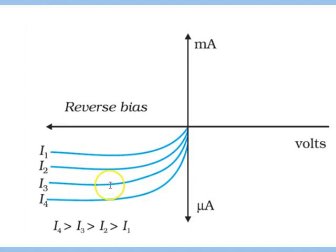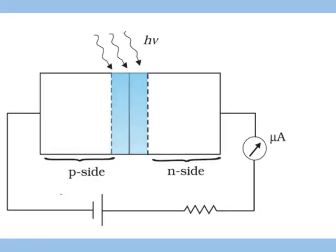And after a particular voltage, all the electron hole pairs are constituting current. Now only if you increase the intensity, the value of I increases when more electron hole pairs are created.